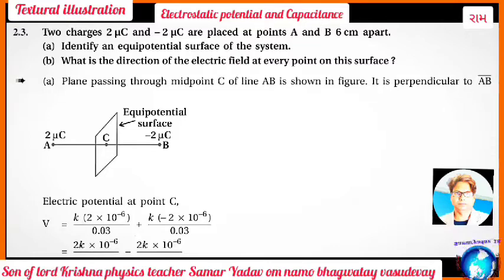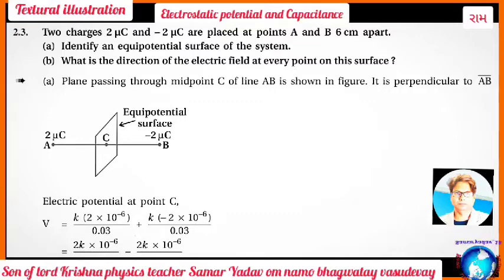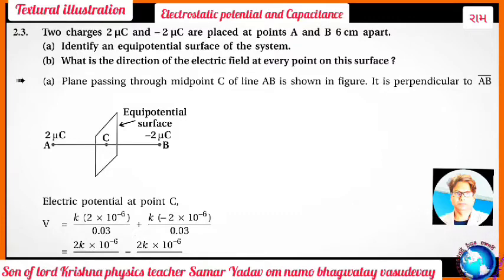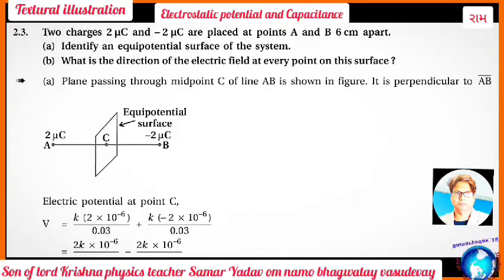A: Identify an equipotential surface of the system. B: What is the direction of the electric field at every point on this surface? For part A: The plane passing through midpoint C of line AB, as shown in the figure — where A has +2 microcoulombs and B has -2 microcoulombs — and perpendicular to AB, is the equipotential surface at C.